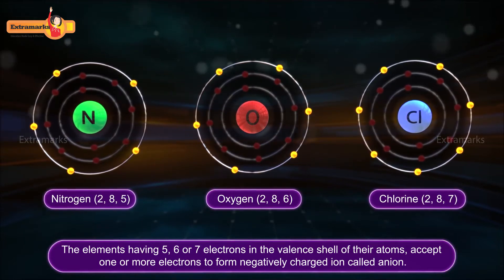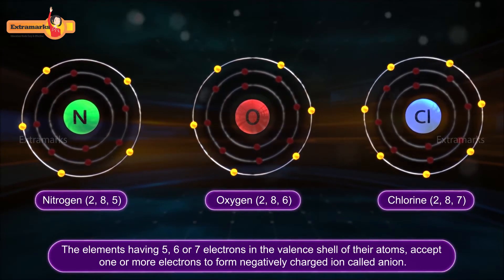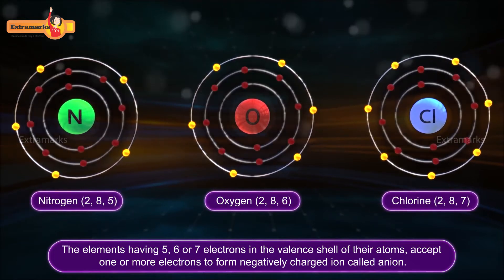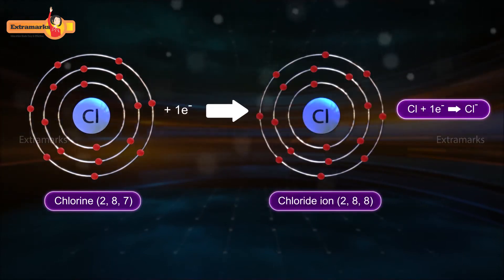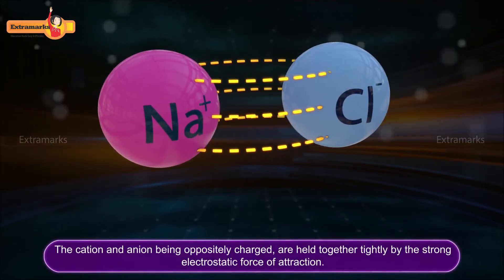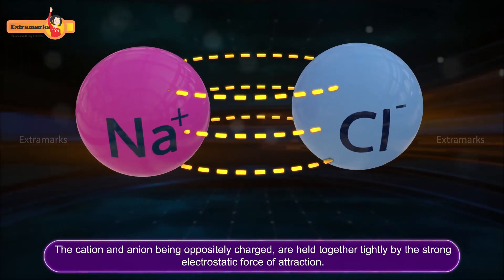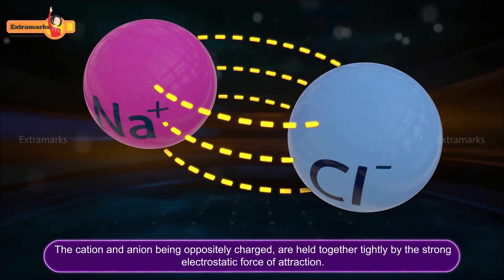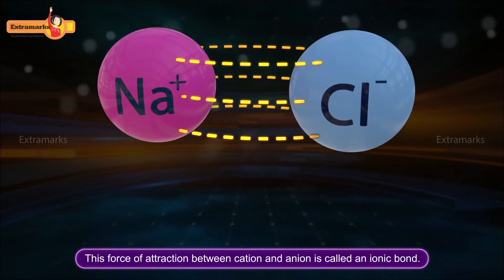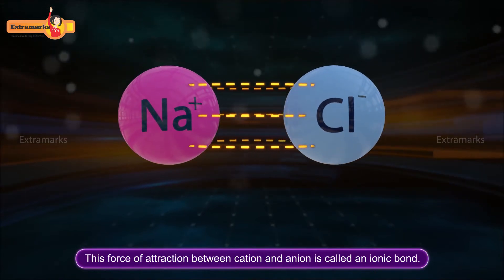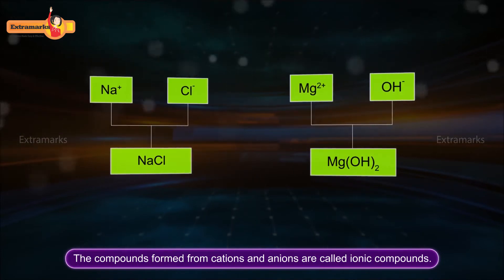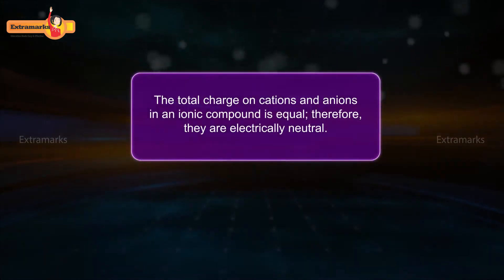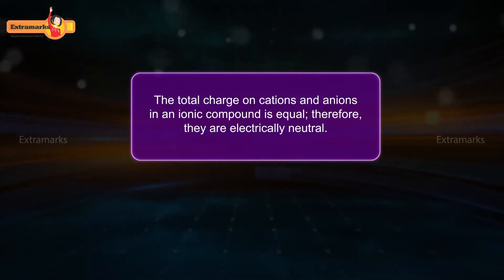The elements having five, six, or seven electrons in the valence shell of their atoms accept one or more electrons to form a negatively charged ion called an anion. For example, chlorine atom gains an electron and forms a negatively charged chloride ion. The cation and anion, being oppositely charged, are held together tightly by the strong electrostatic force of attraction. This force of attraction between cation and anion is called an ionic bond.